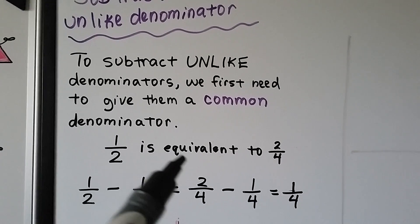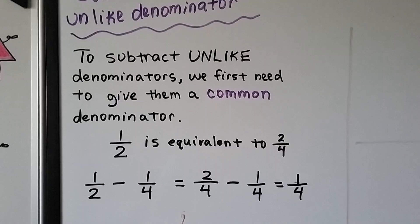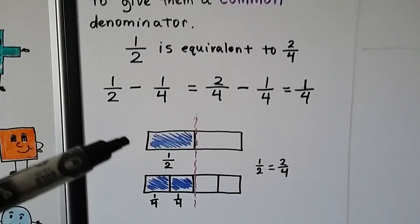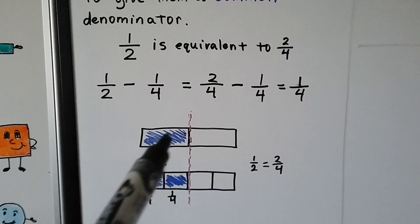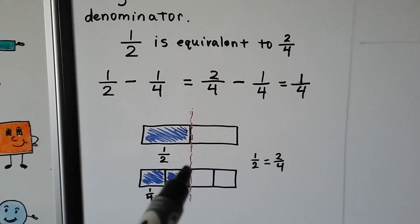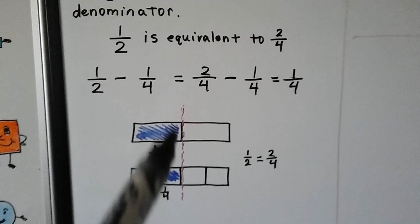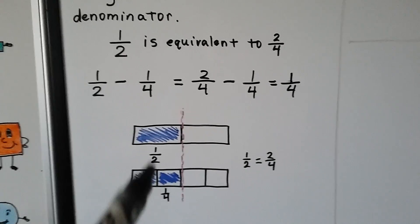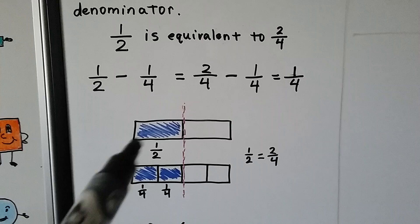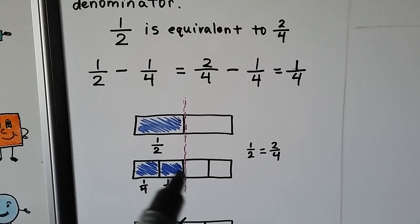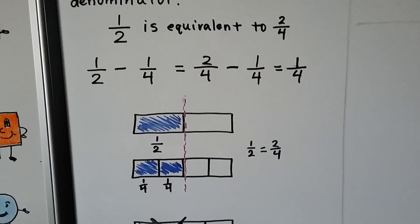One half is equivalent to two-fourths. If you look at my drawing here we have this bar cut in half, so that's half of it. But if we cut it into fourths and we had two of them, that's also the same amount as a half. If this was a candy bar and it was cut into four pieces and you had two of the fourths, it would be the same thing as having half of it.